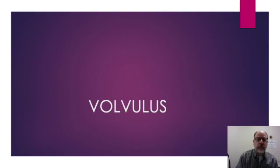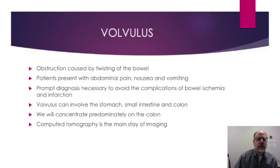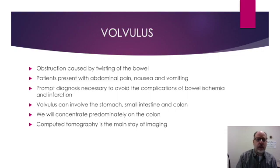I would now like to talk to you about bowel volvulus. This is an important diagnosis to make radiographically as it is often a surgical emergency or surgical urgency. Volvulus is an obstruction caused by twisting of a bowel loop. Patients present with abdominal pain, often cramping in nature, nausea, and vomiting. Prompt diagnosis is necessary to avoid the complication of bowel wall ischemia and catastrophic bowel infarction.